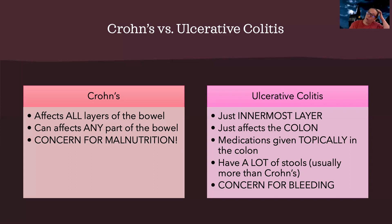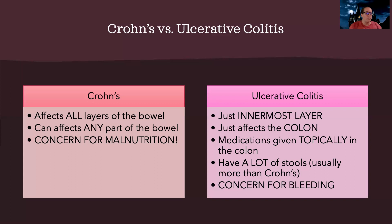People with Crohn's can definitely have fluid and electrolyte imbalances because symptoms can lead them to not really want to eat. But as a whole, when you're thinking Crohn's, think malnutrition. Ulcerative colitis — think bleeding, hemodynamic instability, and fluid and electrolyte imbalances because of the bleeding.